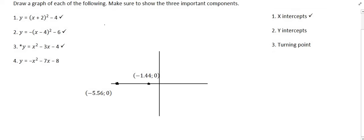We now proceed to find the y-intercept by making x equal to zero. Calculating that gives a y-intercept of minus 8. We can now place that on the graph.